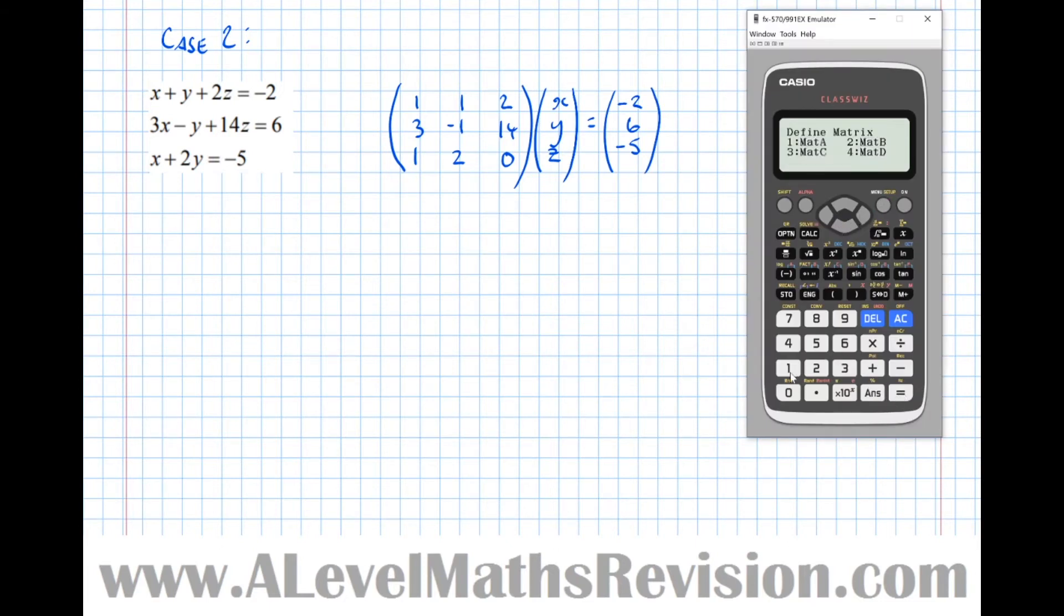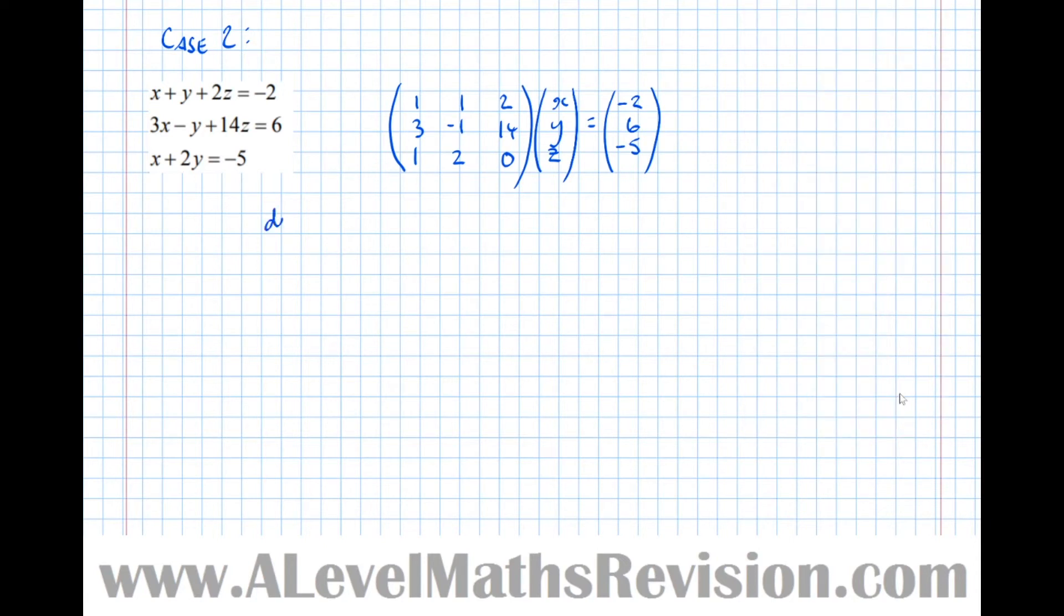And let's find the determinant of that matrix. So we'll define that to be matrix A, 3 by 3. So 1, 1, 2, 3, minus 1, 14, just overwrite my answers from the last example. 1, 2, 0. OK, operation, matrix calculation. Operation, scroll down to get determinant. And operation, matrix A. We can see that the determinant is zero. So in this case, the determinant of M is zero.